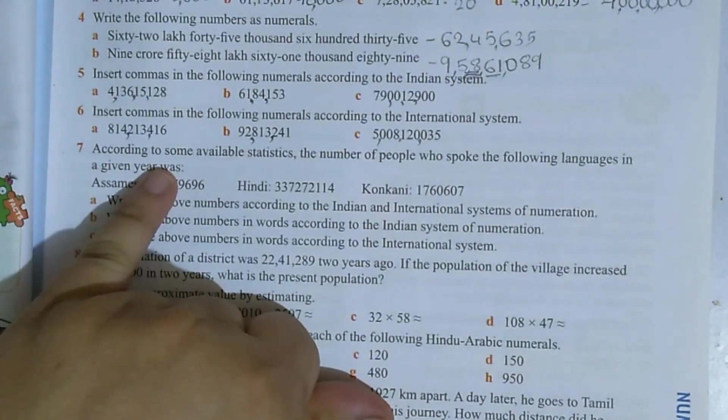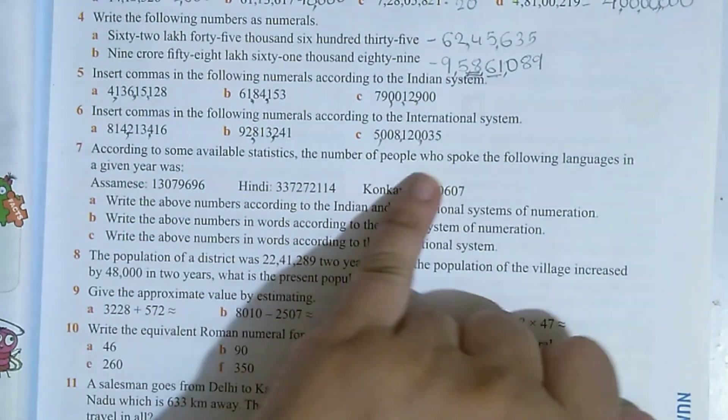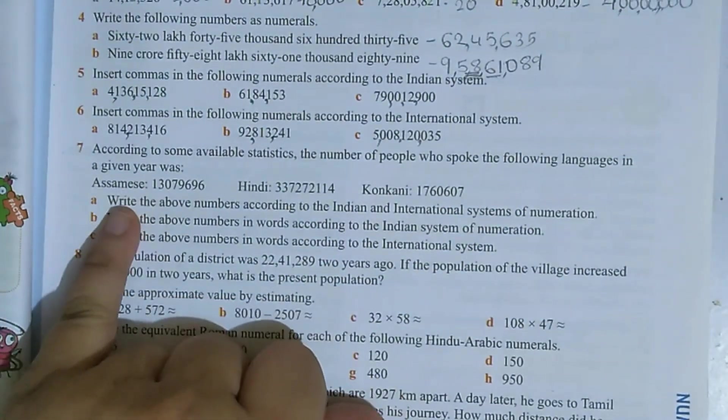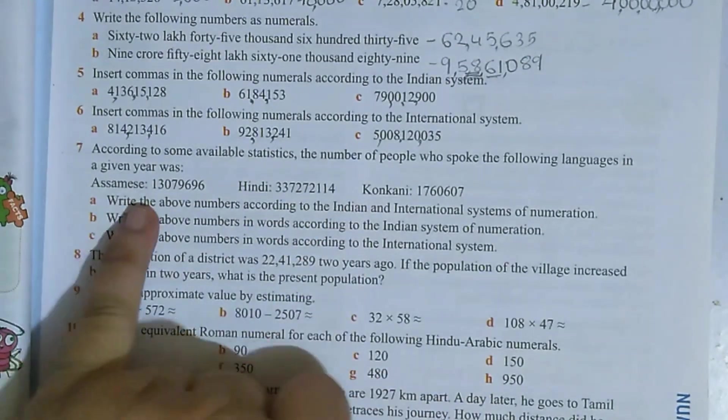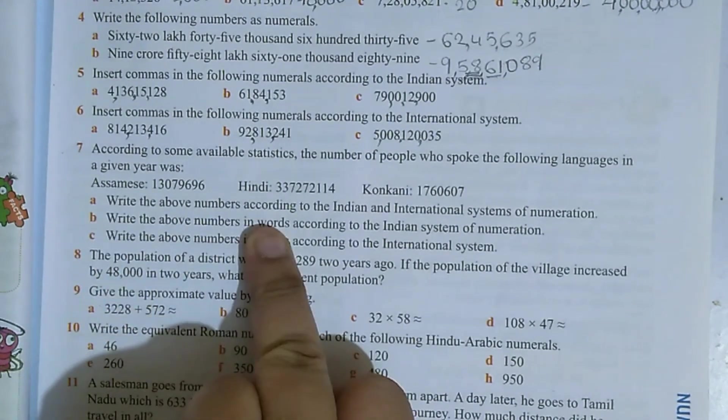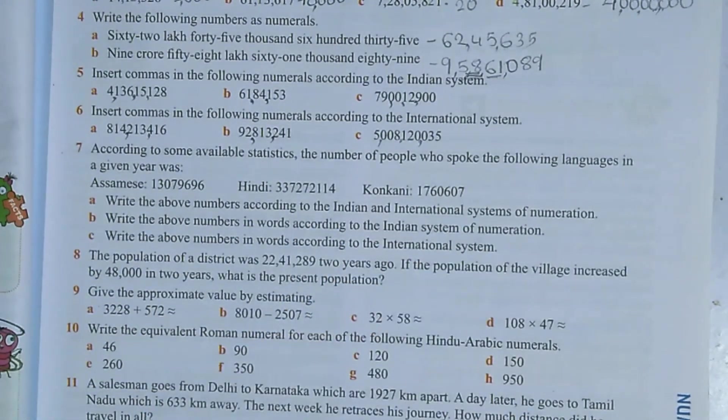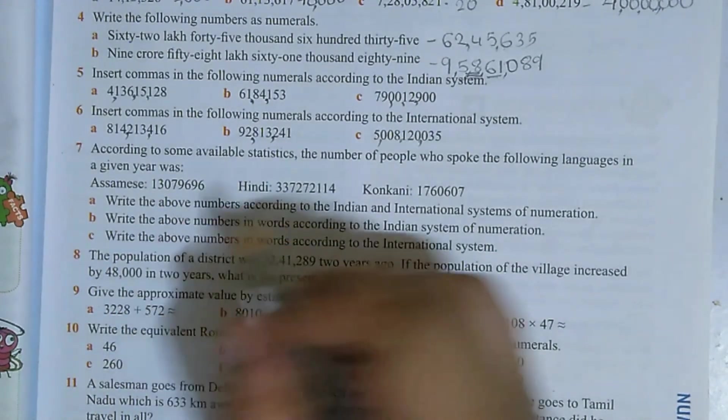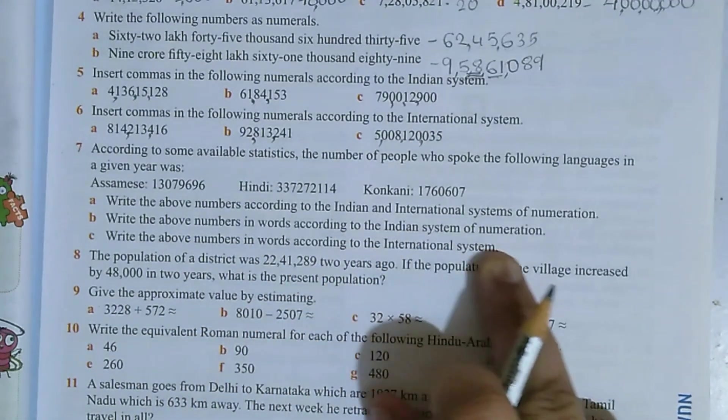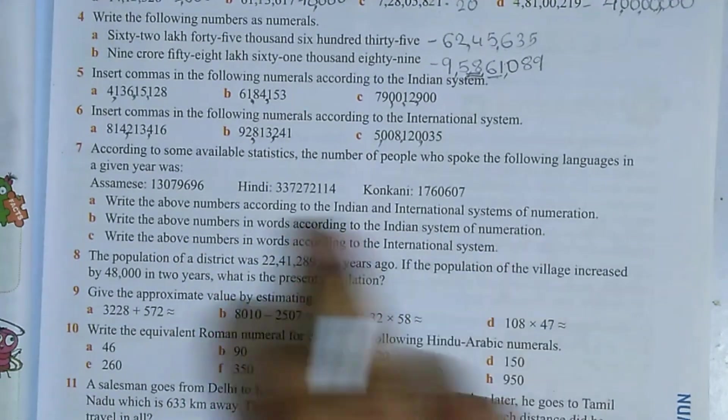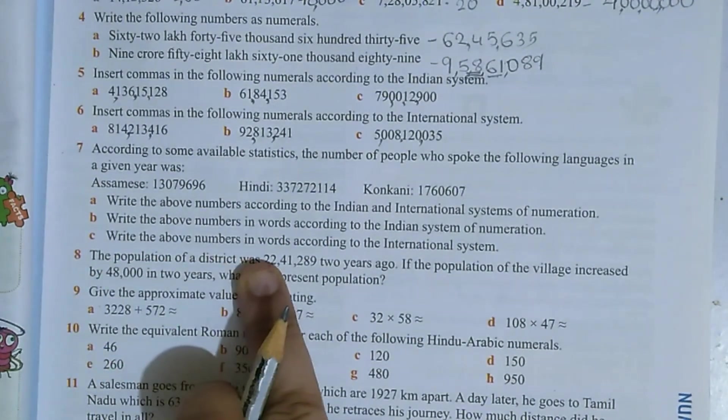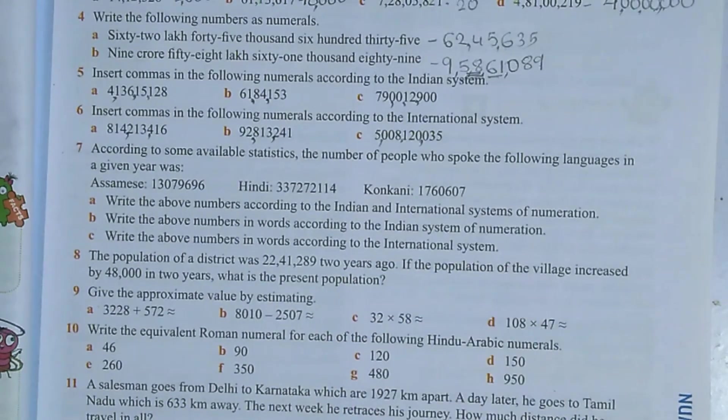Question number 7: According to some available statistics, the number of people who spoke the following languages in a given year was Assamese, Hindi, and Konkani. See, comma is not given, so it's difficult for us to read. So in part A, what do you have to do? Write the above numbers according to the Indian and international system of numeration.